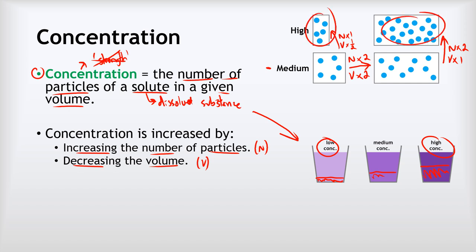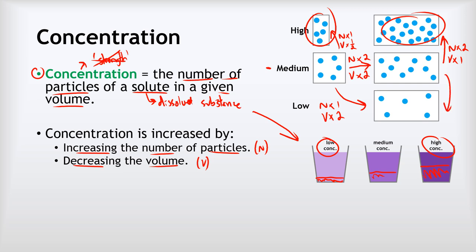You can tell that these have got higher concentration because the particles are closer together. To reduce the concentration, we could keep the number of particles the same but increase the volume, or we could keep the volume the same but halve the number of particles. In both cases, either by increasing the volume or halving the number of particles, the concentration has decreased. You can see that just by looking at how far apart the particles are — these are more spread out, therefore the concentration is lower.